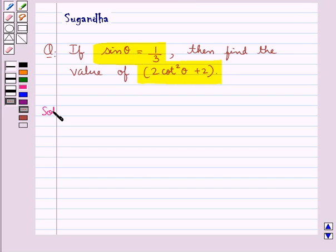Let's proceed with the solution now. We have given sin θ equal to 1 upon 3. We need to find the value for 2 cot²θ plus 2.